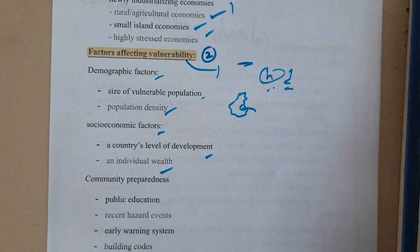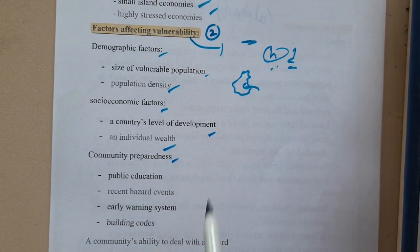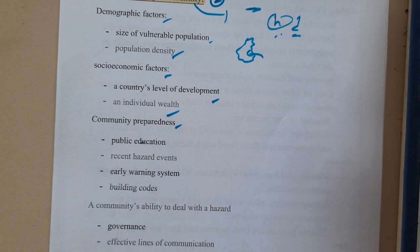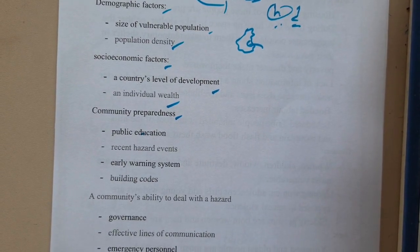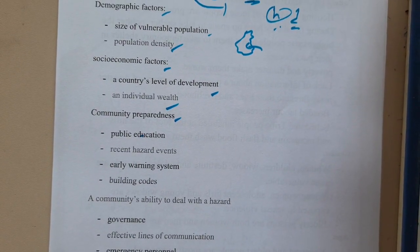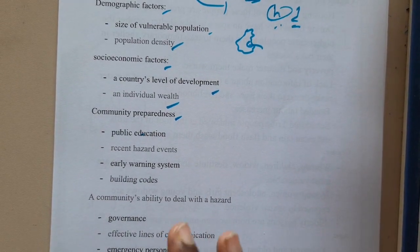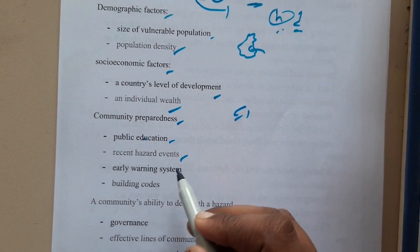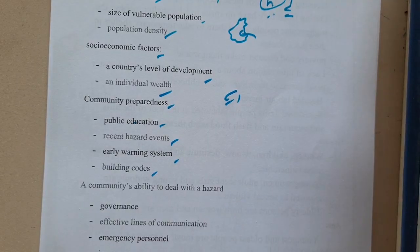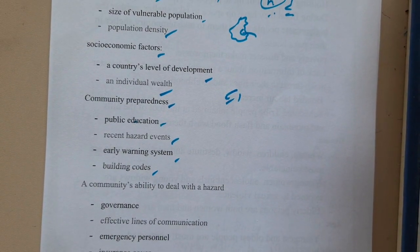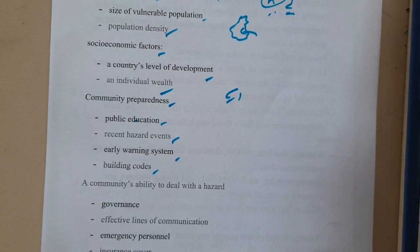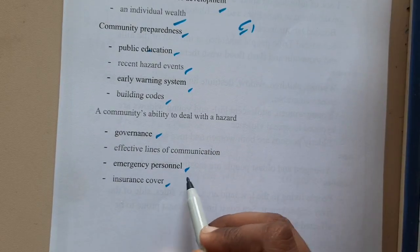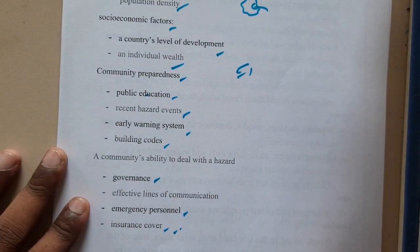Then there is community preparedness — as discussed in the disaster management life cycle lectures, preparedness means having a plan ready for any kind of disaster. This includes public education, response to hazard events, early warning systems, and building codes. Additionally, a community's ability to deal with a hazard relates to governance and emergency policies.